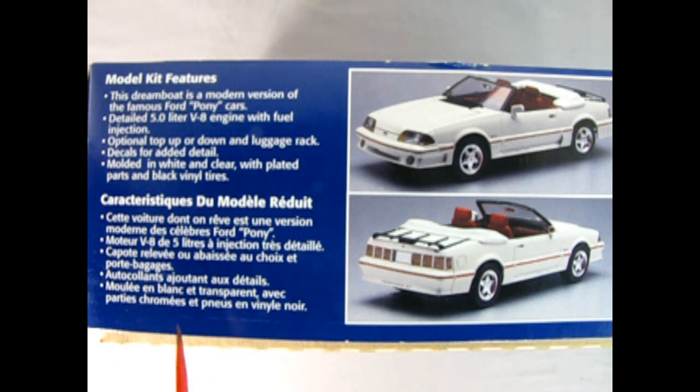This side of the box tells us all about the model kit features that we get. Says this dream boat is a modern version of the famous Ford pony cars. Detailed 5.0 liter V8 engine with fuel injection, optional top up or down, and luggage rack. Decals for added detail, molded in white and clear with plated parts and black vinyl tires.